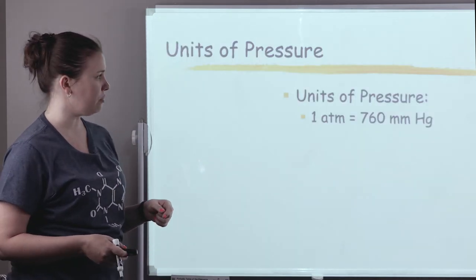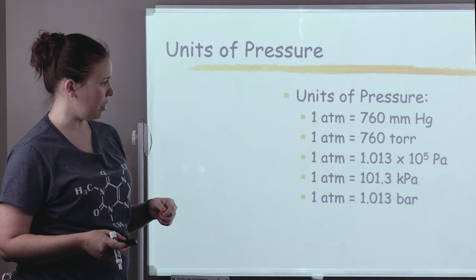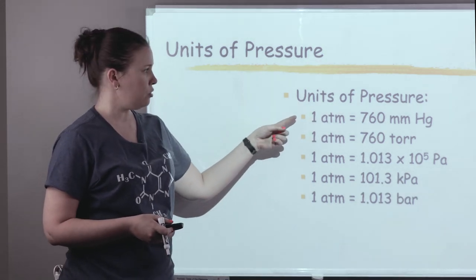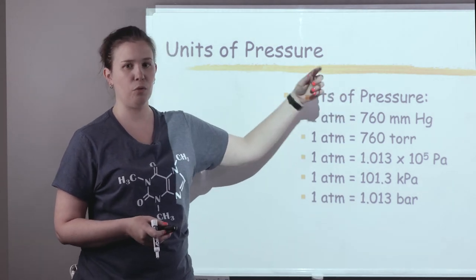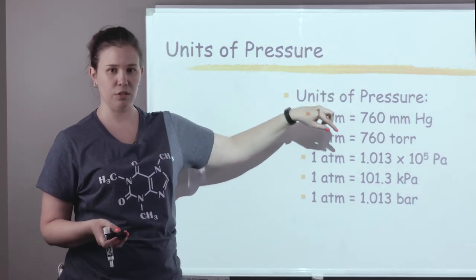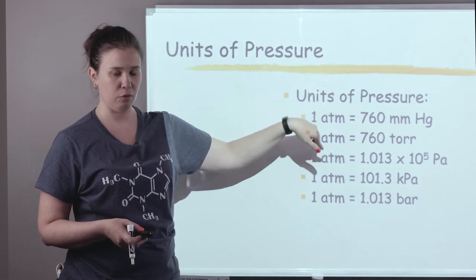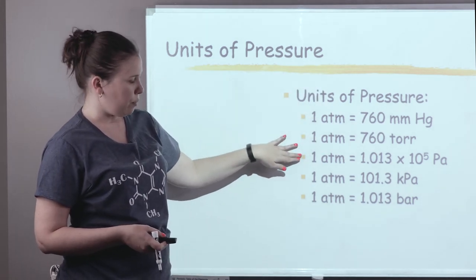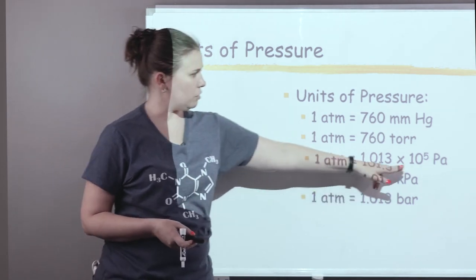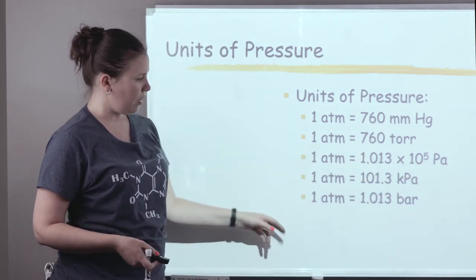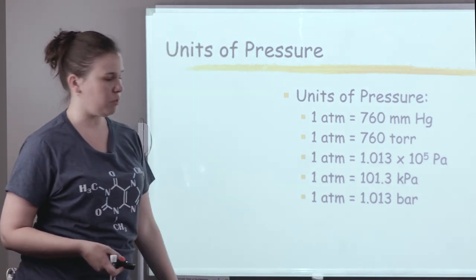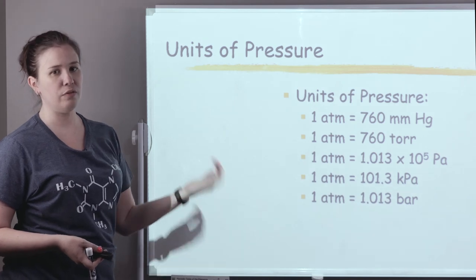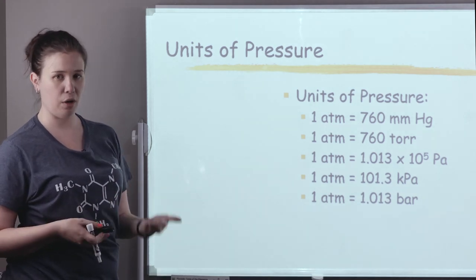I mentioned we'd look at some conversions. Here everything is set to compare to one atmosphere, which is our normal pressure. So it would be equal to 760 millimeters of mercury or Torr — meaning one millimeter of mercury equals one Torr. You can also see the regular Pascals and why they would convert to kilopascals, so we don't have to deal with scientific notation. Barometric pressure versus atmospheric pressure is pretty much a one-to-one. These are some different conversion factors you can use if the units don't match up in a problem.